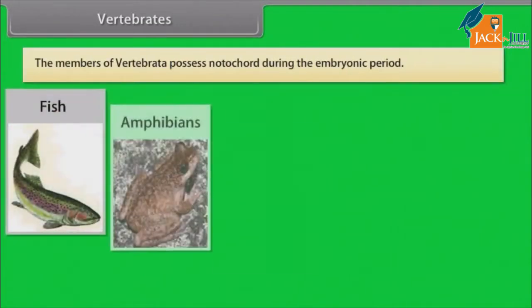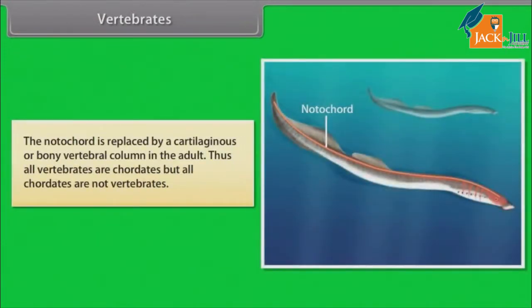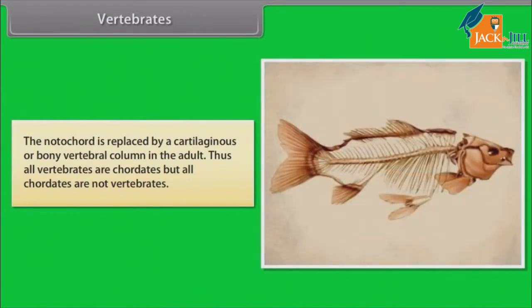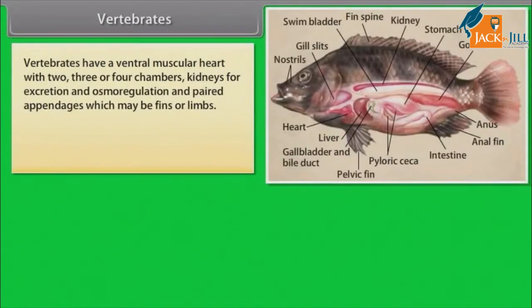The members of Vertebrata possess notochord during the embryonic period. The notochord is replaced by a cartilaginous or bony vertebral column in the adult. Thus, all vertebrates are chordates, but all chordates are not vertebrates. Vertebrates have a ventral muscular heart with two, three or four chambers, kidneys for excretion and osmoregulation, and paired appendages which may be fins or limbs.